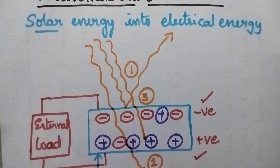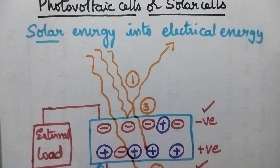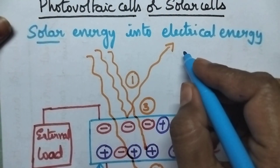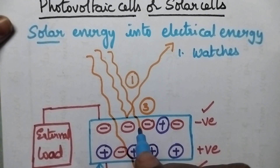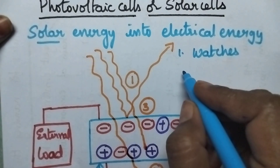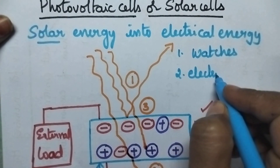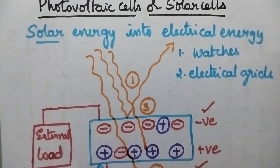The important applications of photovoltaic cells: the electricity produced by a photovoltaic cell is in tiny amounts and hence it can be used in watches, clocks, etc. If a large amount of electricity is produced, it can be used in electrical grids. This is all about the working of photovoltaic cells along with the applications, advantages, and disadvantages.